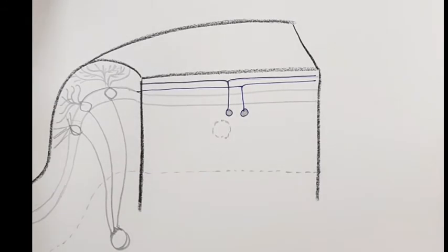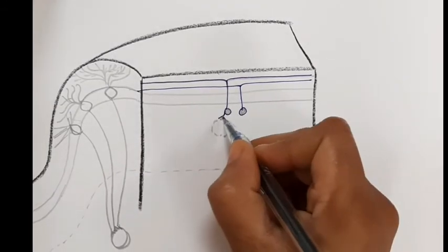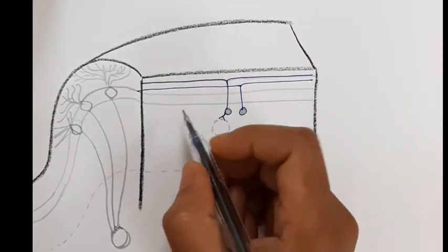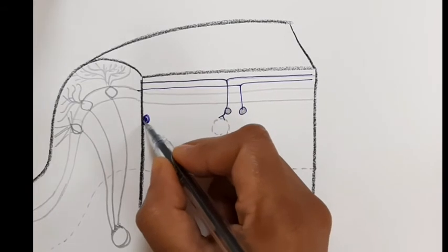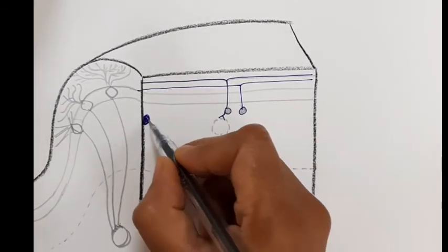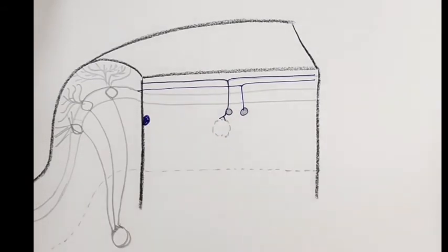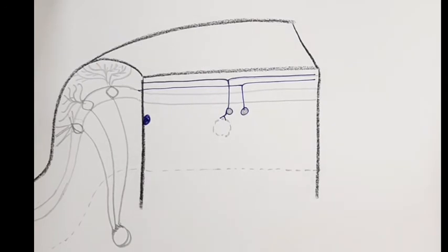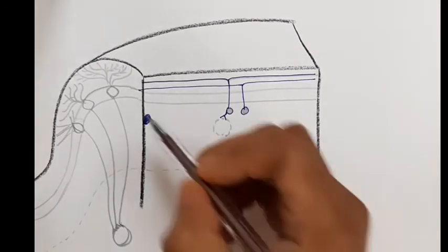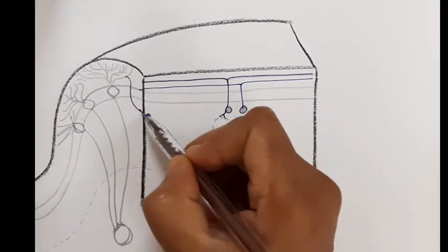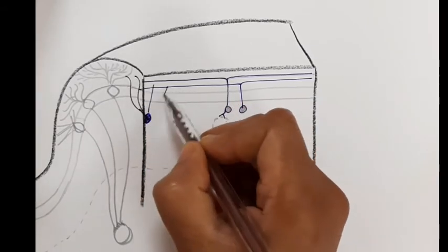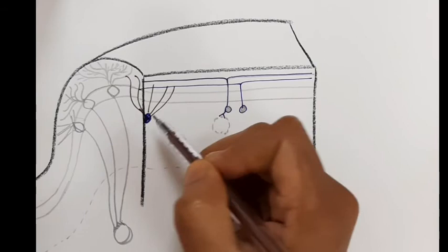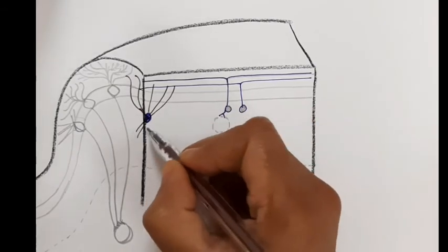The granular cell synapses with the mossy fiber. The mossy fiber in turn forms 30 to 40 terminal swellings, and these swellings are known as rosettes. The mossy fiber synapses with the dendrites of the granular cells and Golgi cells.